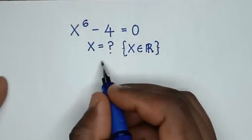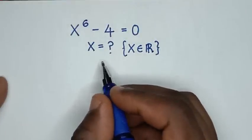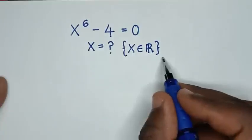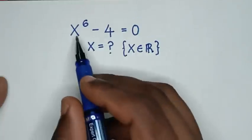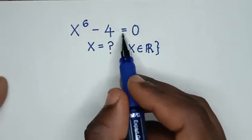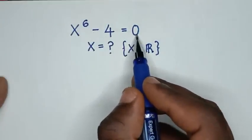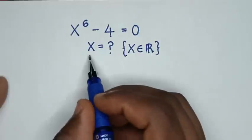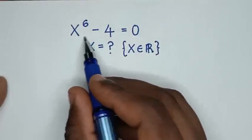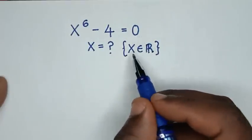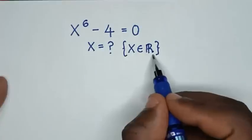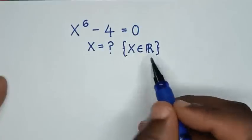Hello, you are welcome to solve this math problem, which is x to the power of 6 minus 4 is equal to 0. To find the values of x from this equation, we say that x is an element of the real numbers.